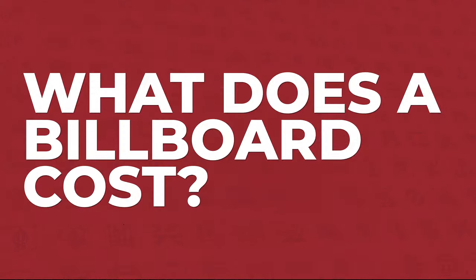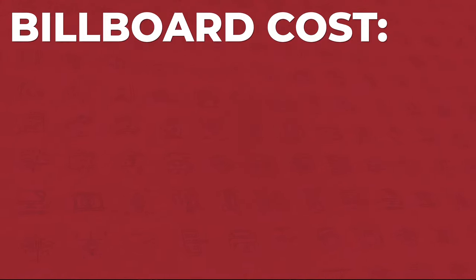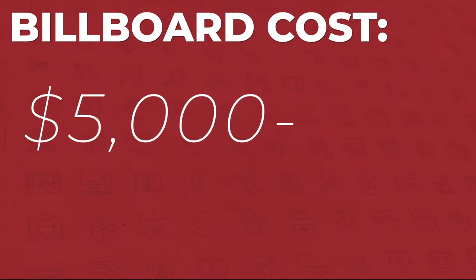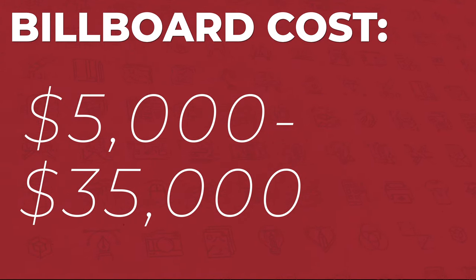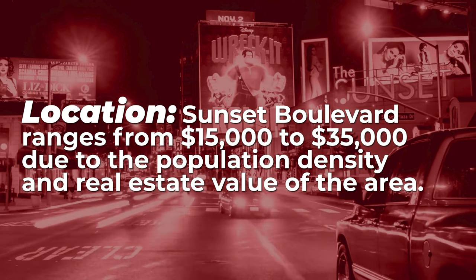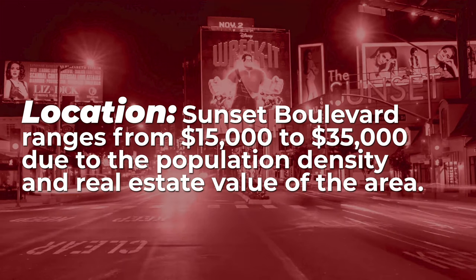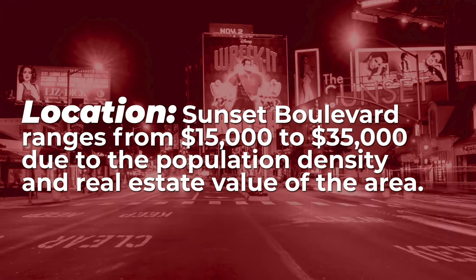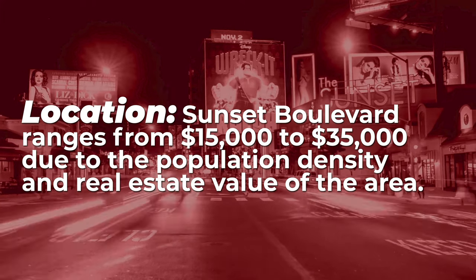What does a billboard actually cost? It depends on the size and whether it's digital or print. Billboard advertising costs can go as low as $5,000 on the low end and as high as $35,000 — and that's per month. For example, Sunset Boulevard billboards range from $15,000 to $35,000 due to the population density, real estate value, and the area itself. It's a highly prominent, affluent area, so you're going to have to drop some coin to advertise there.